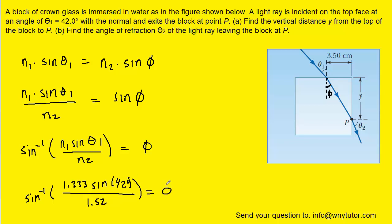And then the index of refraction for crown glass is 1.52. And so when we type this into our calculators, we get an angle of roughly 35.9 degrees. So that's that angle right here.